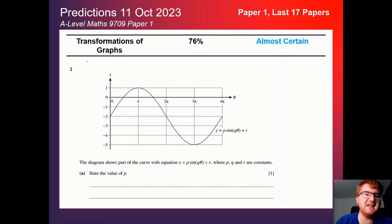First of all, we have at 76% here, transformations of graphs. So again, in that almost certain category. And this can vary in terms of the style of question. I put one for you here. This is quite common here where you need to work out P, Q and R from a trigonometric function. That can happen quite often. Sometimes they'll outline the actual transformations they want you to do and then what the function will be afterwards. So there's a few different ways that they can answer that particular question.